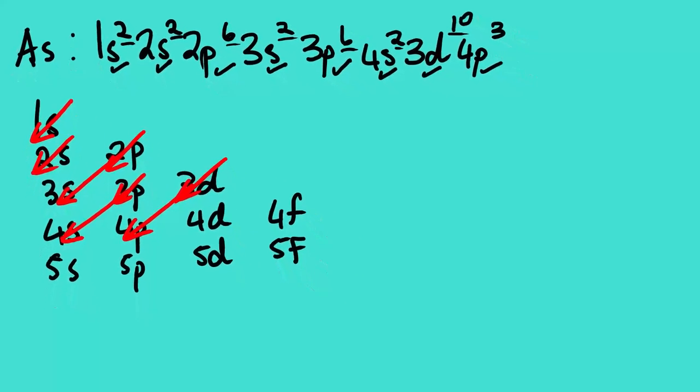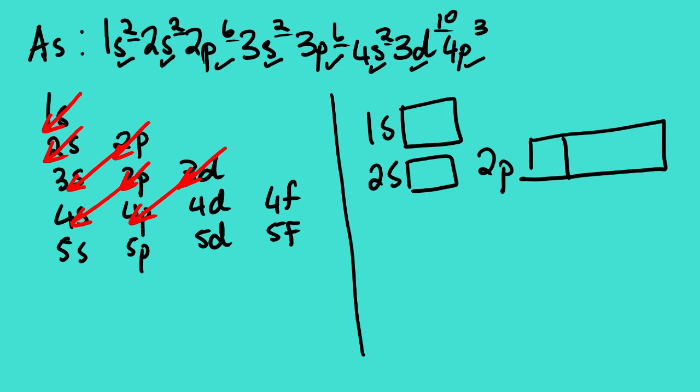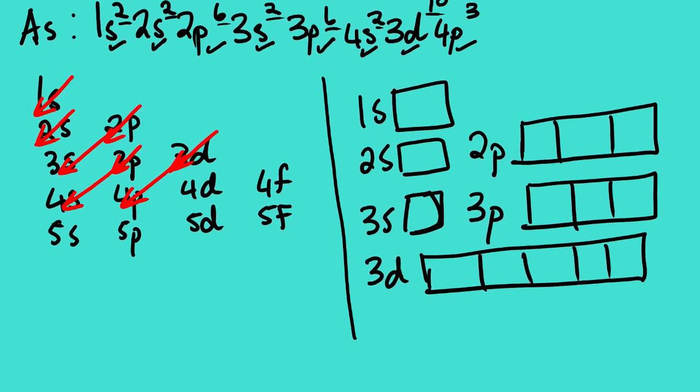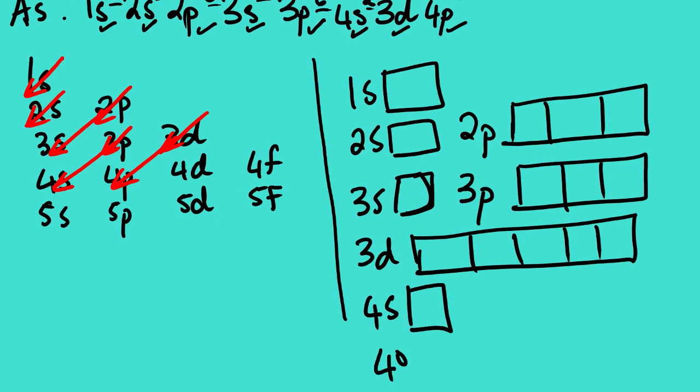Now, looking at the orbital diagram, we are going to have 1s which is 1 box, 2s which is 1 box, 2p which will be 3 boxes, 3s with 1 box, 3p which will be 3 boxes, 3d which will be 5 boxes, 4s which will be 1 box, and 4p which will be 3 boxes.